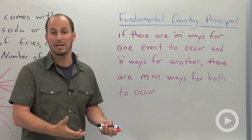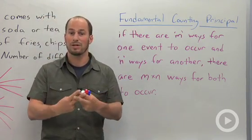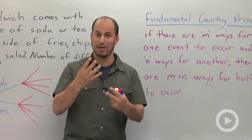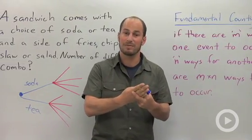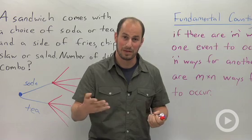Going back to our sandwich, there were two drinks, there were four sides, so the number of possible events are just two times four, which is eight.